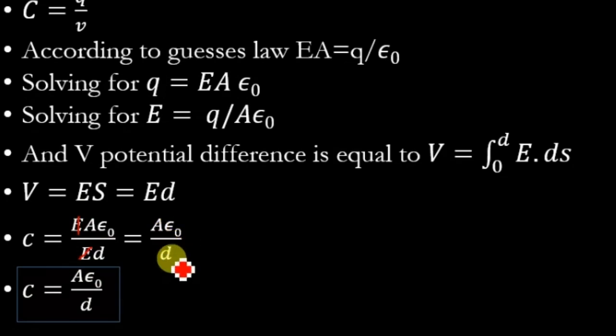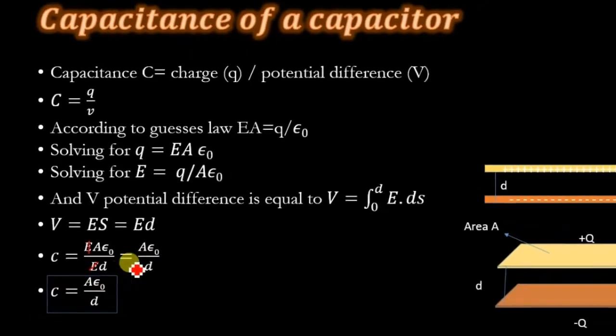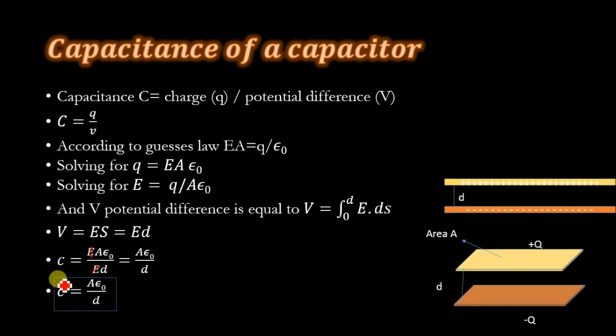We get A𝜀₀ divided by d, and this is the capacitance of a parallel plate capacitor, where A is the area of this plate and d is the distance of separation between these two plates, where 𝜀₀ is the permittivity of free space.